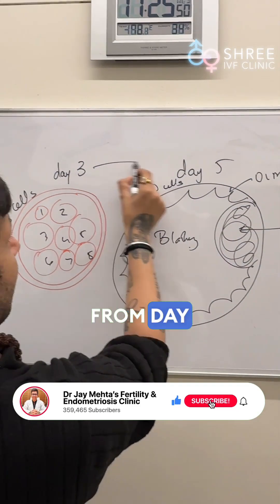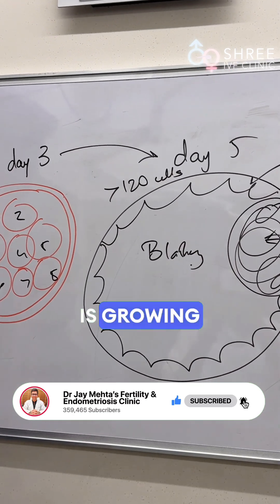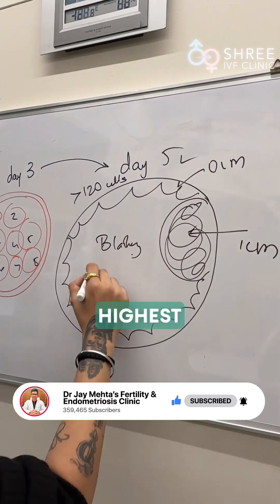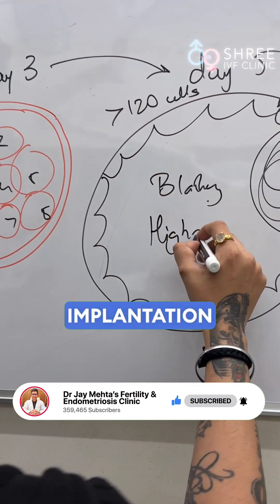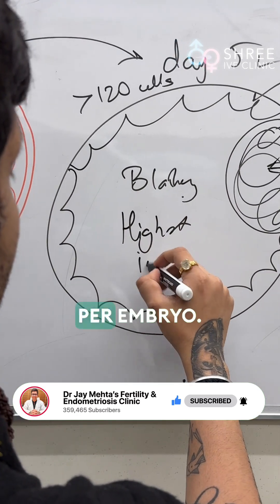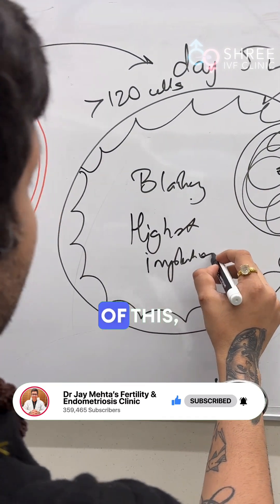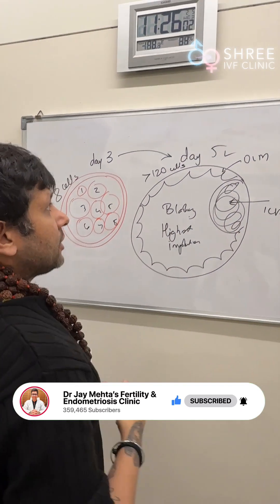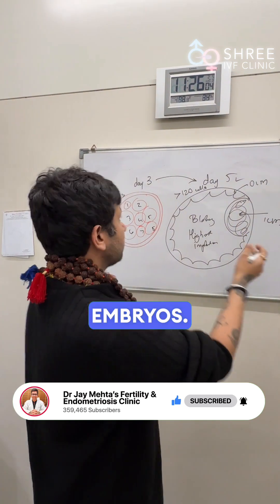From day 3 to day 5, if an embryo is growing in a laboratory, your day 5 embryo has one of the highest chances for implantation per embryo. As a result of this, 99% of the clinics have shifted to day 5 embryos.